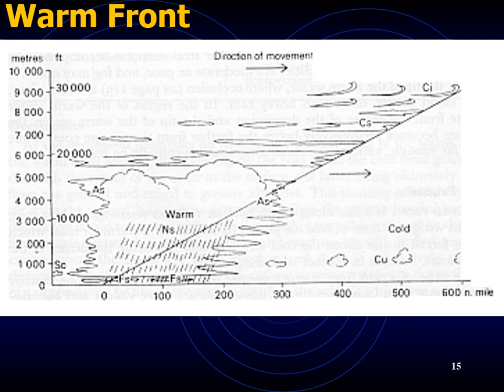Temperature steadily rises as you approach a warm front. In terms of clouds, cirrus, then altostratus and nimbostratus form in succession in advance. Low nimbostratus occurs at passage, followed by stratus or stratocumulus at the rear of the warm front. In terms of weather, continuous rain or snow occurs before the front, stopping or turning to drizzle after passage. Visibility is generally good except in rain ahead of the front, becoming poor during and after passage.